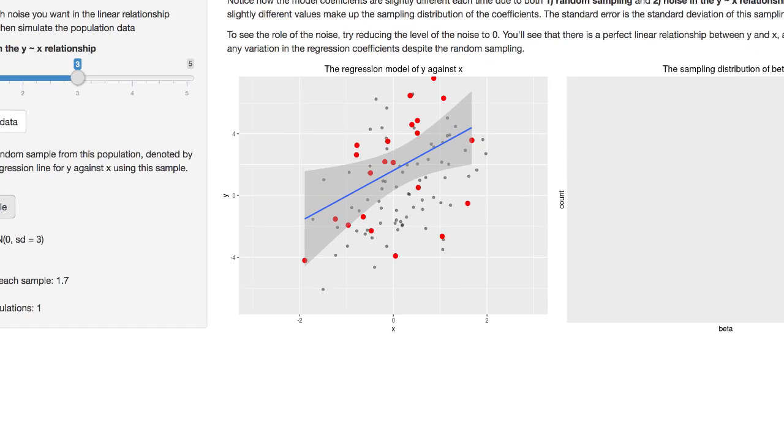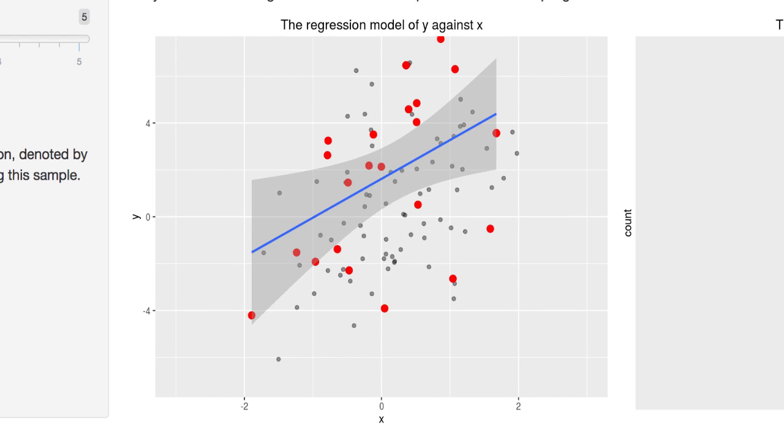So the graph on the left shows us the data that have been sampled as well as the population. The population data are shown as grey circles and any one of those circles that has been sampled is highlighted in red. So you can see there are fewer red circles than there are grey ones because the sample is smaller than the population.